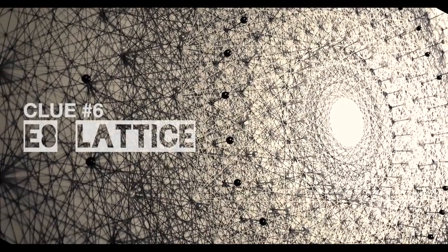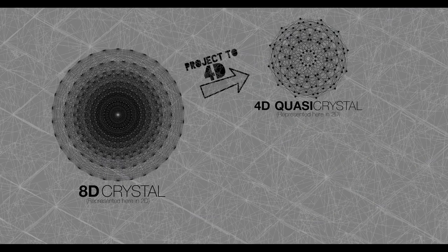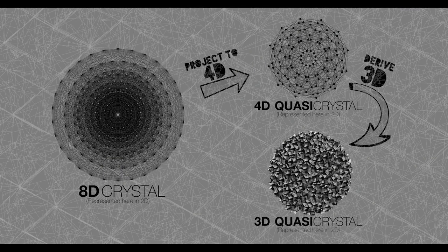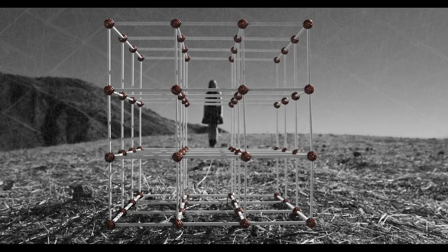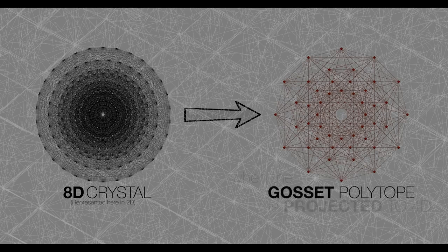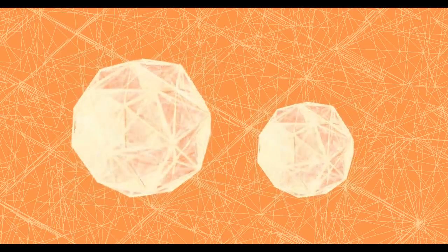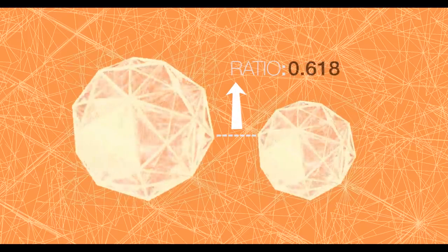To generate that 3D quasi-crystal — the substructure of the pixelated fabric of reality — we project this 8D crystal to 4D, and then convert that to 3D. Just like the basic cell shape of the 3D cubic lattice is the cube, the cell shape of the E8 lattice is an 8D shape with 240 vertices called the Gossett polytope. When the Gossett polytope is projected to 4D, it becomes two identical shapes of different sizes. The ratio of their sizes is a unique number: 0.618 — also known as the Golden Ratio.